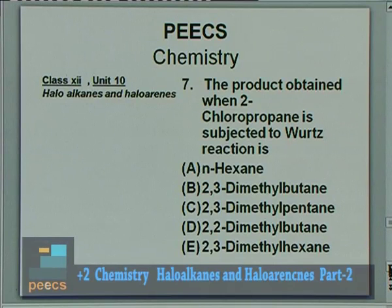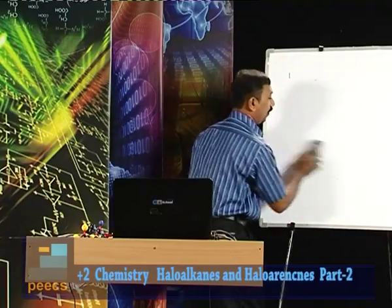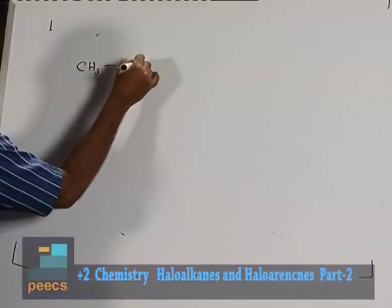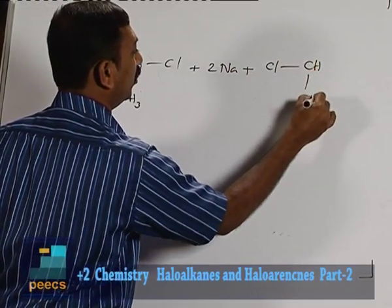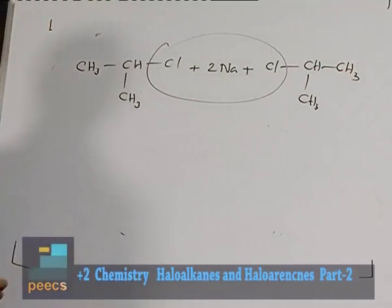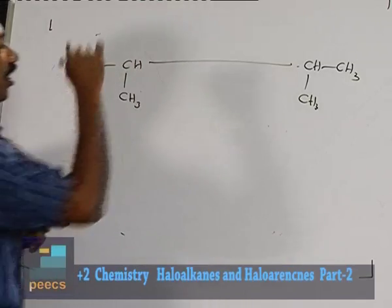Question 7: The product obtained when 2-chloropropane is subjected to Wurtz reaction — options are: normal hexane, 2,3-dimethylbutane, 2,3-dimethylpentane, 2,2-dimethylbutane, and 2,3-dimethylhexane. The correct answer is B — 2,3-dimethylbutane. Two molecules of 2-chloropropane react with sodium in dry ether; 2NaCl is eliminated and a bond forms between the two CH(CH₃) groups, giving 2,3-dimethylbutane.